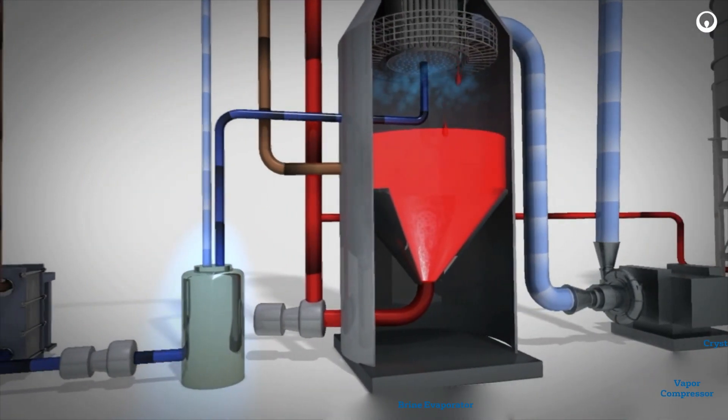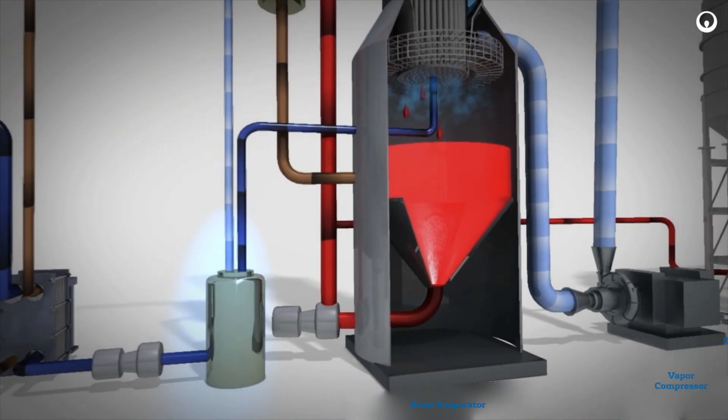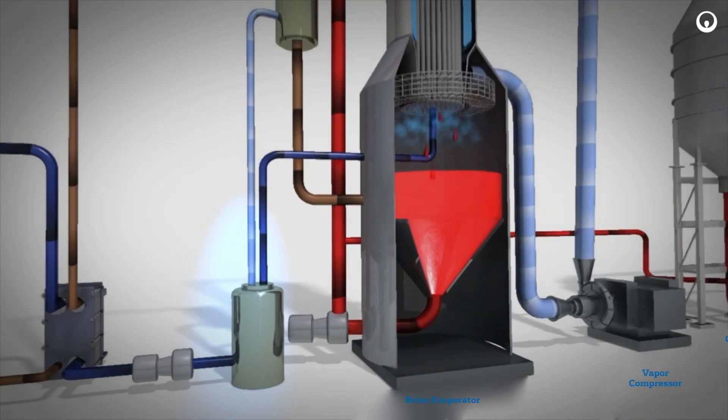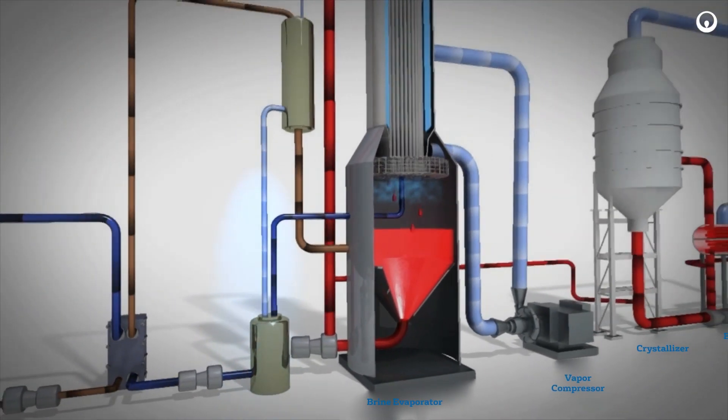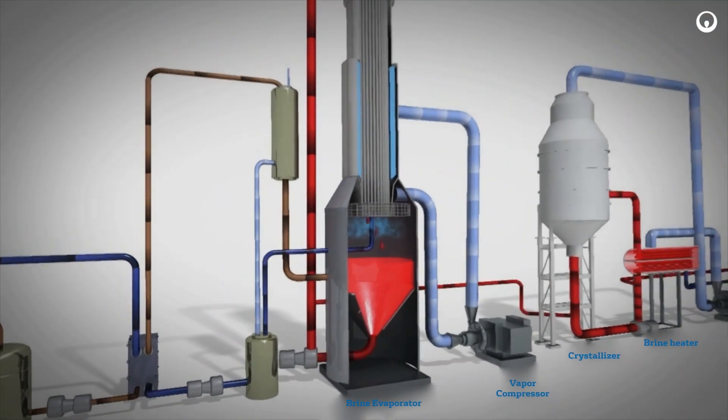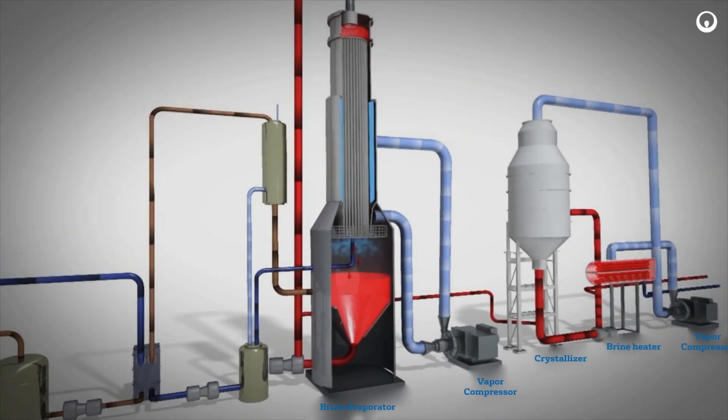The distillate flows to the distillate tank and then is pumped through the heat exchanger. Hot distillate is cooled to heat incoming feed water. The cool distillate is available for reuse or recycle.